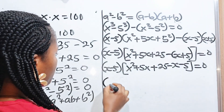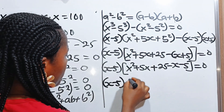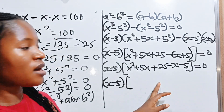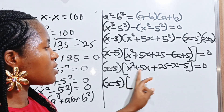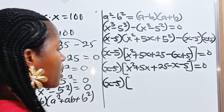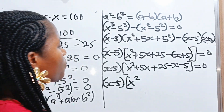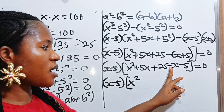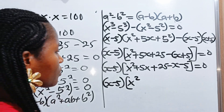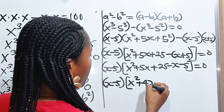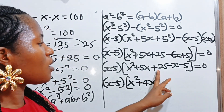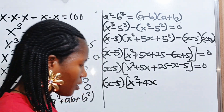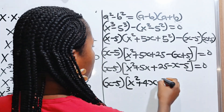So we have x minus 5, multiplied by, let's collect like terms: x squared — we have only one x squared so we bring it out — then plus 5x minus x gives us plus 4x, and plus 25 minus 5 gives us plus 20. So x minus 5 times x squared plus 4x plus 20 equals 0.